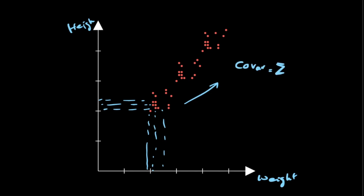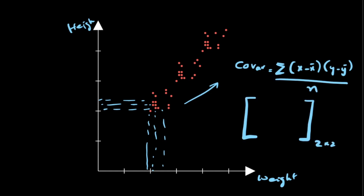It is a sum product of the distances of each data point from their corresponding mean in each direction, divided by the total number of data points. The covariance matrix, which is a 2×2 matrix in a 2-dimensional space, gives details of how these data points vary within each direction as well as across directions.